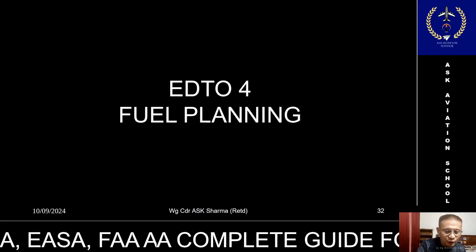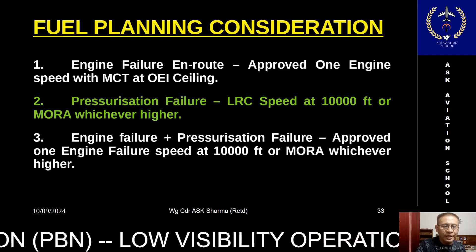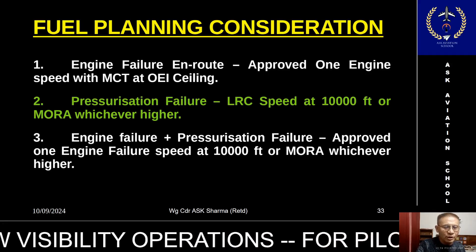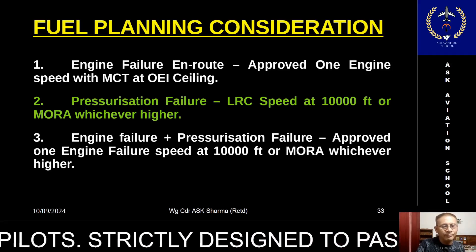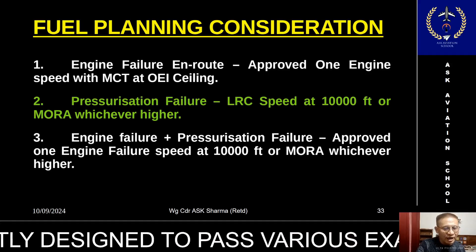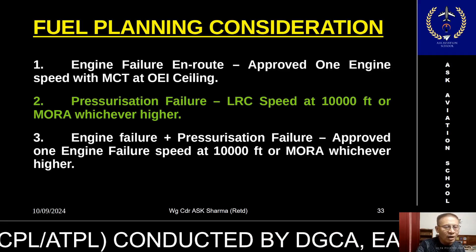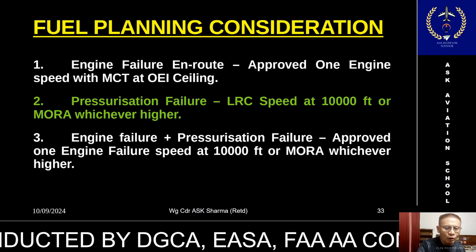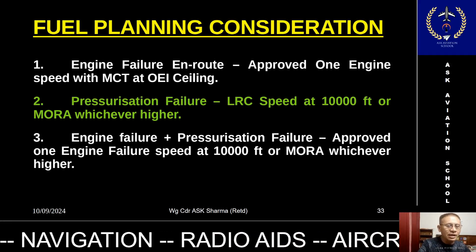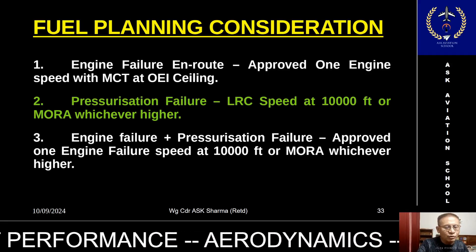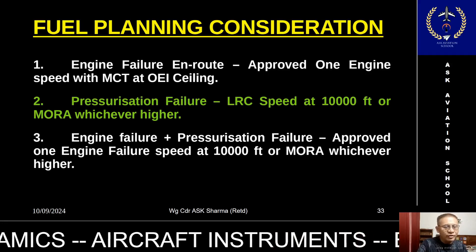In an EDTO flight, fuel planning we consider three scenarios. The first one being the aircraft to fly with one engine inoperative at a speed which is approved by the regulator from which you have obtained the certification, at the one engine inoperative ceiling. The second one is the pressurization failure en route; after having suffered the pressurization failure you will be descending down to fly level 100 or MORA, whichever is higher, and fly with a speed of long range cruise, and divert to the suitable en route alternate.